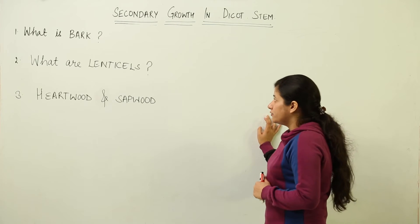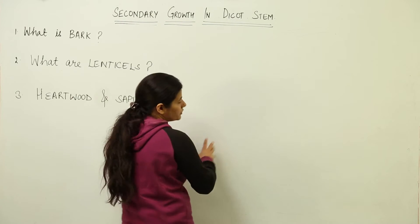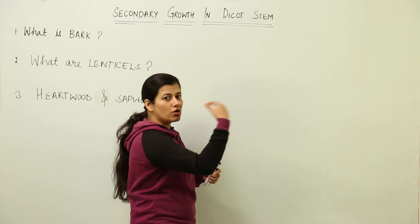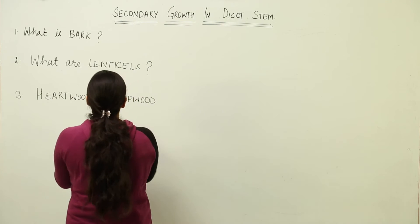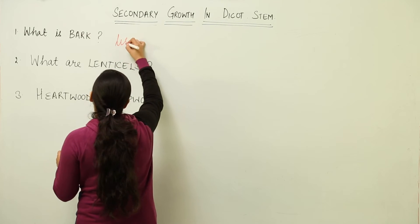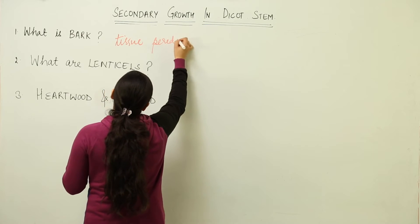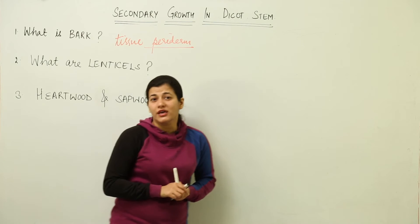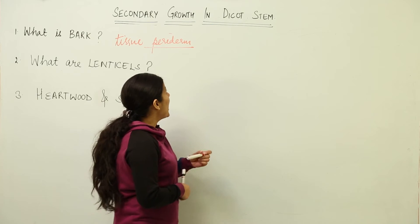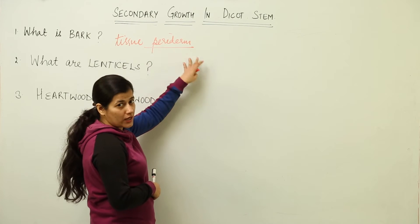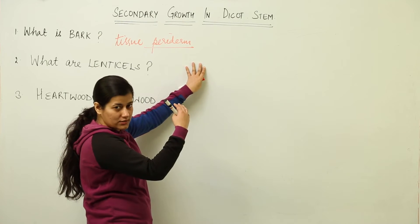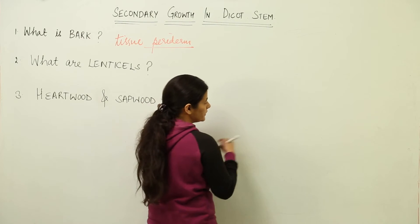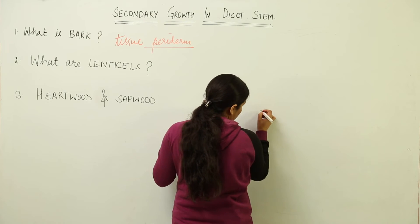What is bark? We need to recall what we studied in secondary growth. Starting from the center point of the tree trunk, bark is a type of tissue present in the periderm. The periderm was formed by three components: cork cambium, secondary cortex, and cork. The bark comprises all the components that lie beyond the vascular cambium.